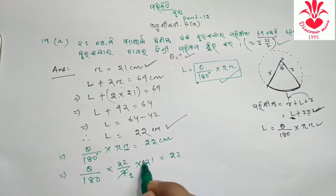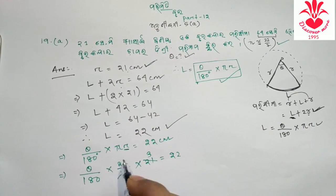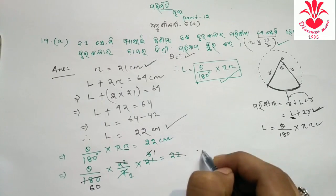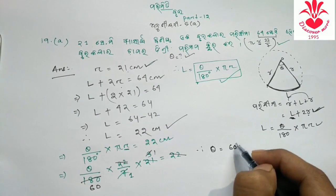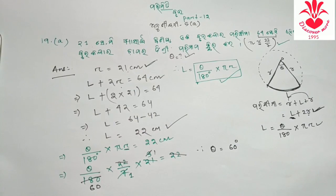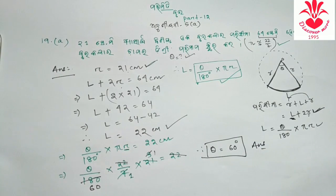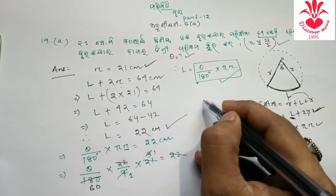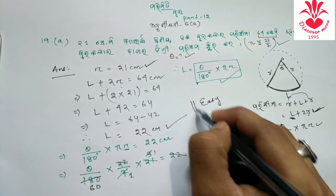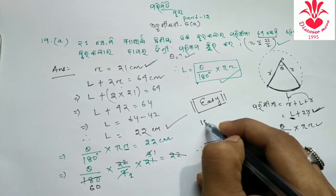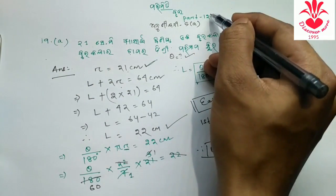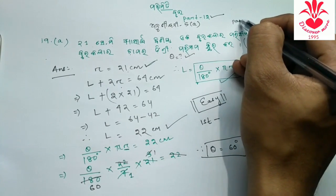Looking at 21, 22, 23 — we get the value of theta (central angle) as 60 degrees. With 60 degrees noted, we write 60 centimeters. If there is a problem, first watch the previous video — our already completed Part 12. We have already finished that part.